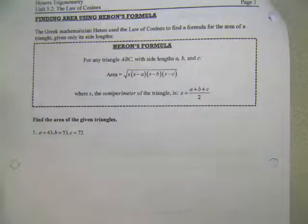He was a Greek mathematician, and he used the law of cosines to find the formula for the area of a triangle using only its side length. So now we have area equals one-half times the base times the height. Then we had the formula where we used a side-angle-side construction.